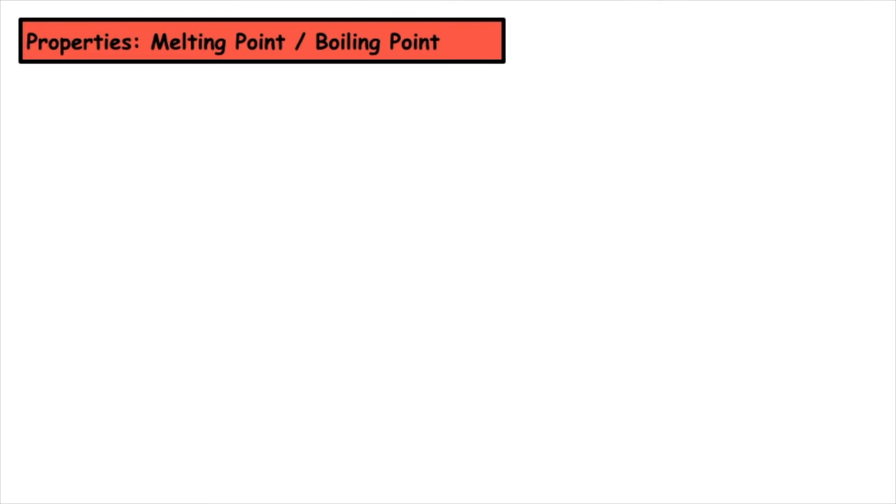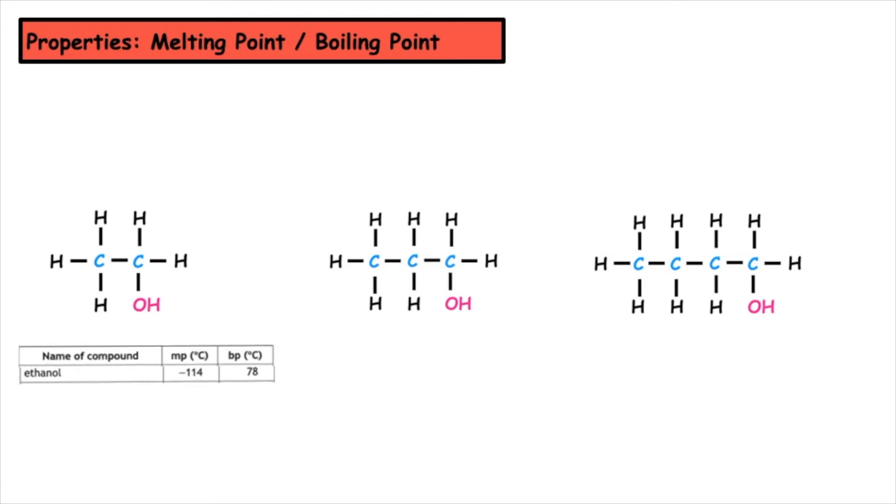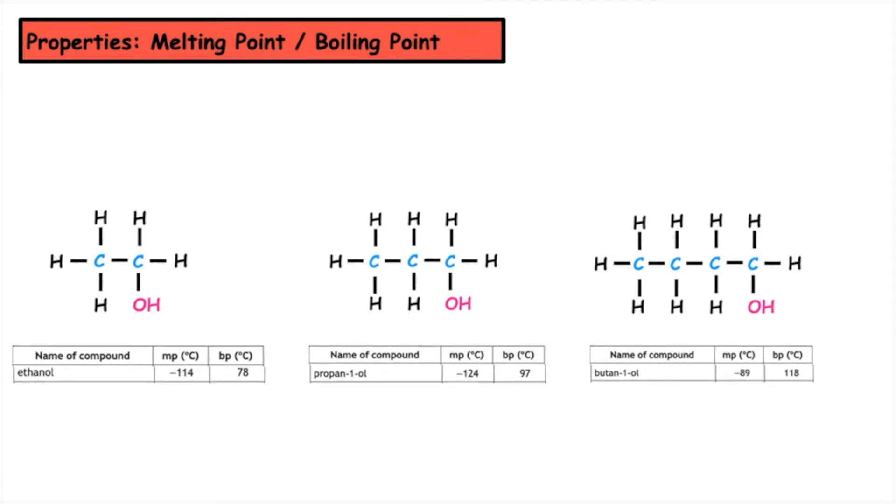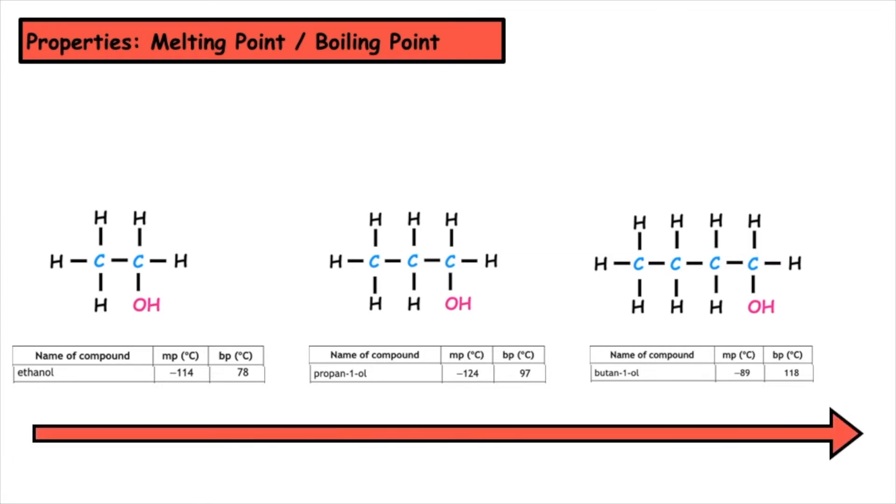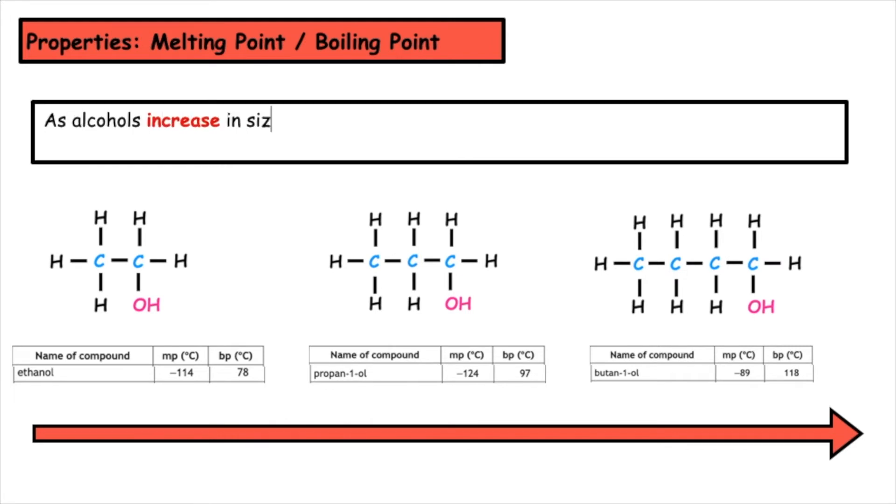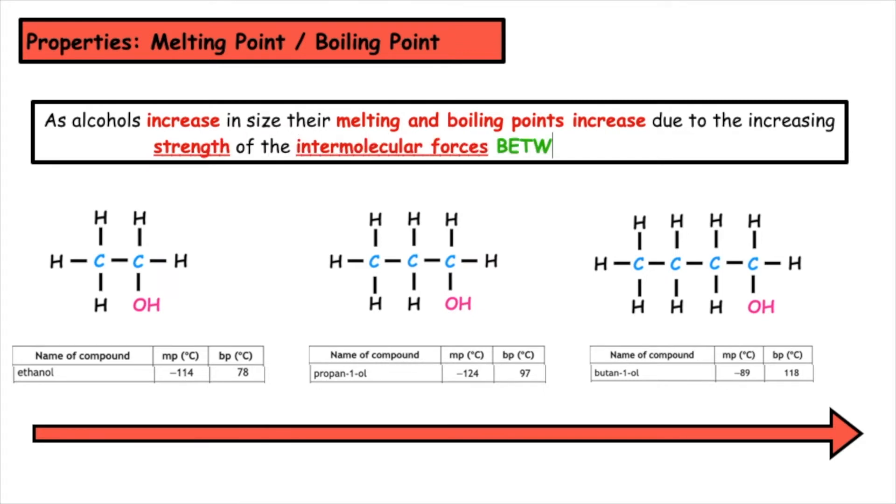The second property is the melting point and boiling point. Here we've got ethanol, propane-1-ol, and butane-1-ol. Using the National 5 Chemistry data booklet, I've identified the melting points and boiling points. As we increase the size of the alcohol, the melting point and boiling points increase. This is due to the increasing strength of the intermolecular forces. If we have more atoms, there are more electrons and therefore more intermolecular forces.